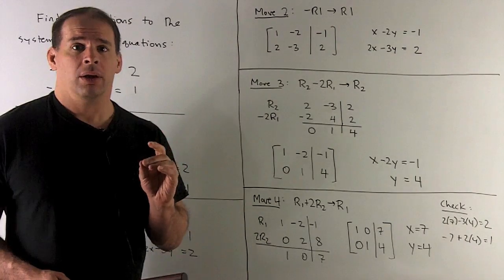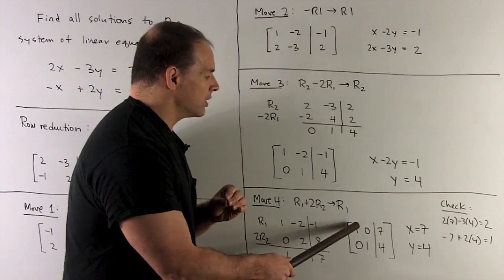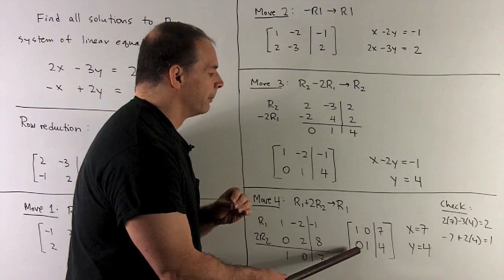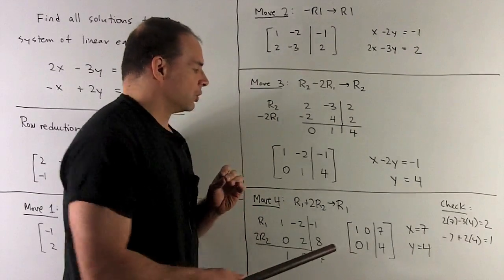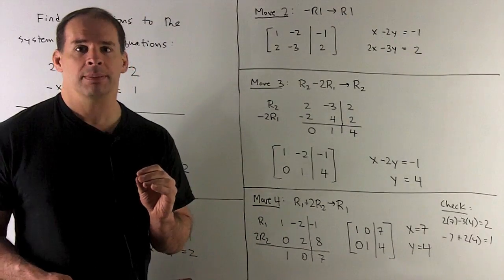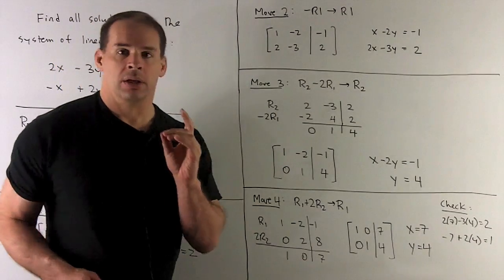Replace row 1 with 1, 0, 7. Now you'll notice we have the identity matrix here. So we can peel off our solution. It's going to be x equals 7, y equals 4.